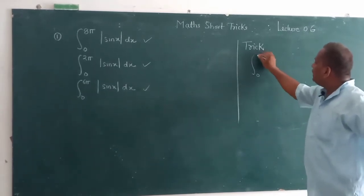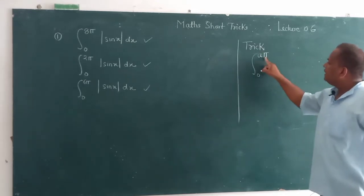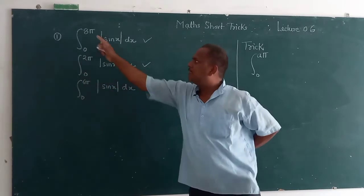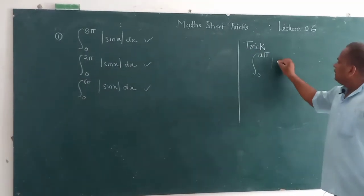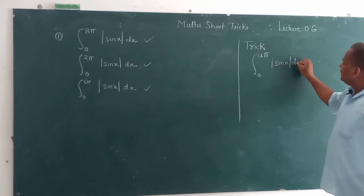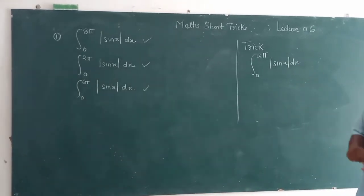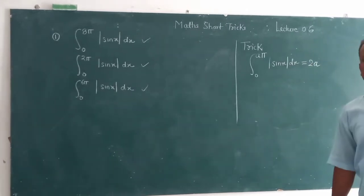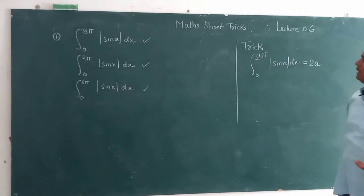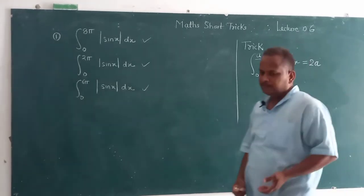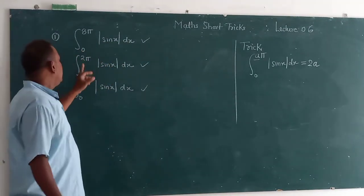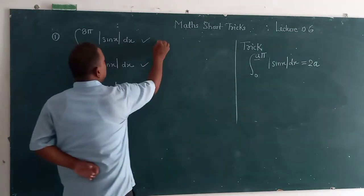Integration 0 to a pi, magnitude of sin x dx. This in three questions A is differing. Same question, the value is 2A. Now A is the value of - in three questions here A is the value of 8, here A is the value of 2, here A is the value of 6. So what is the answer?